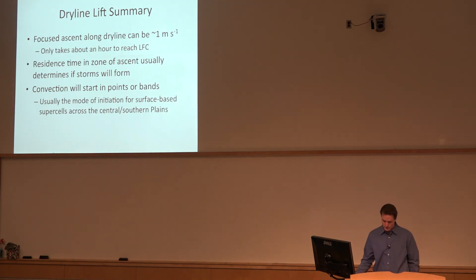So again, summarizing this, without even relying on numerical model output, you can actually come up with a conceptual model to say, can I estimate whether or not I expect storms on the dry line? So again, one meter per second ascent, it only takes about an hour. Can you keep the parcels in that zone of ascent long enough to reach a level of free convection? And when you see storms forming in little points or bands like that, it's almost certainly something on the mesoscale that's driving it.